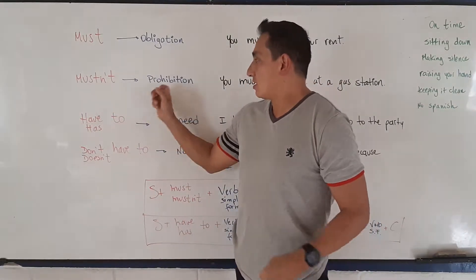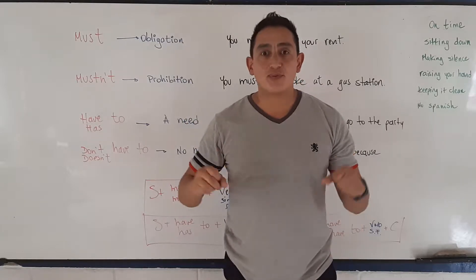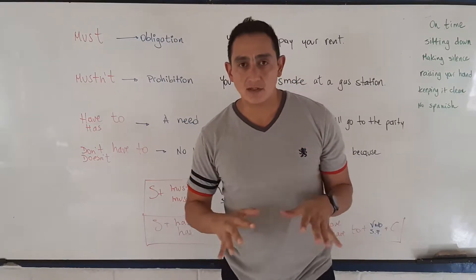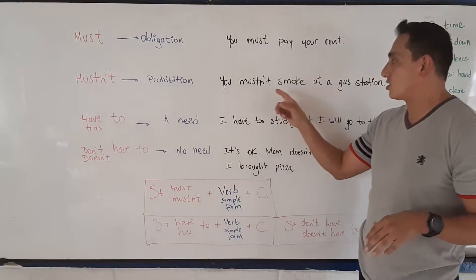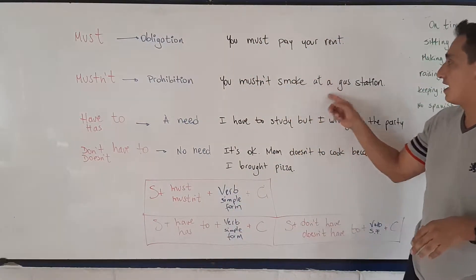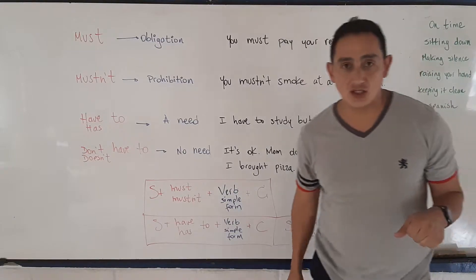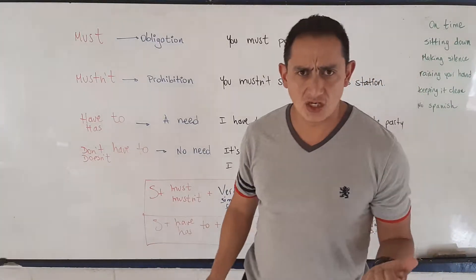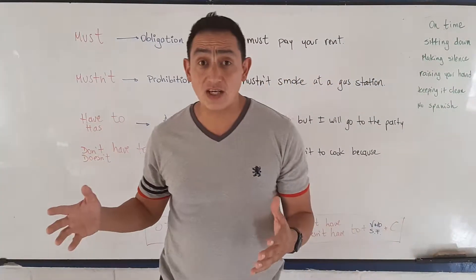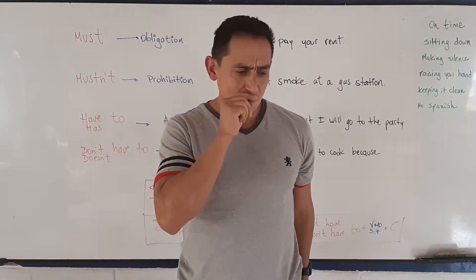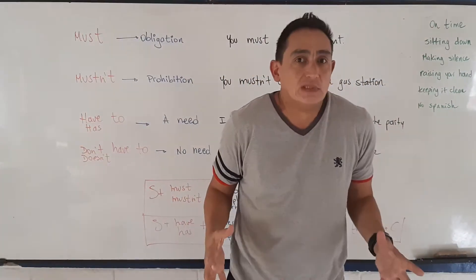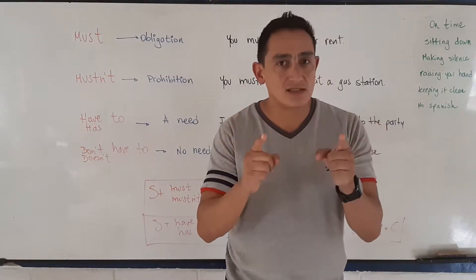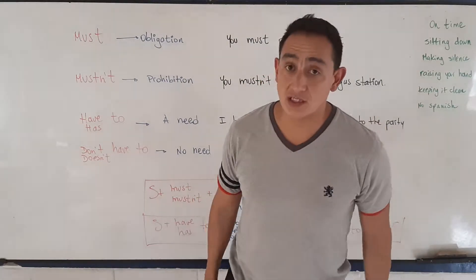Mustn't is basically a prohibition. For example, you mustn't smoke at a gas station. Can you imagine? In a gas station — oh my god — you mustn't smoke at a gas station.